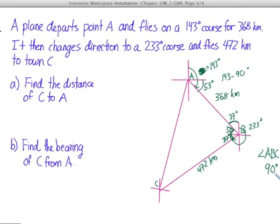That's extremely helpful because now I have a right triangle, and to find the distance between points C and A, I simply need to use Pythagorean theorem. So the distance between points A and C is the square root of 368 kilometers squared plus 472 kilometers squared. We take the square root of all that, and we have approximately 598.5 kilometers.